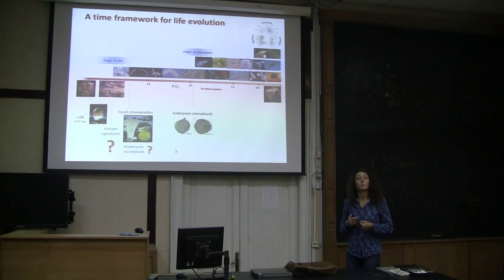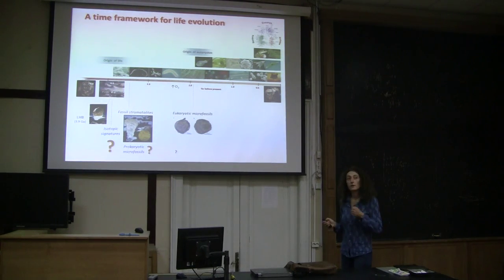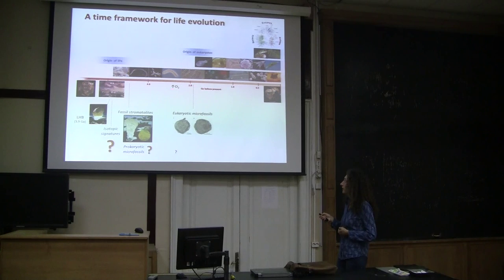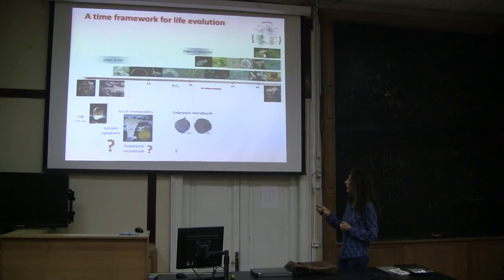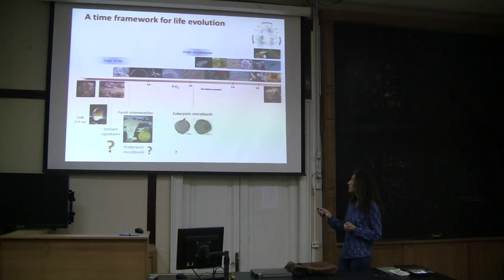When eukaryotes appeared, possibly much later, the oldest not contested eukaryotic microfossils date back to 1.89 billion years ago. There are some claims before but they are controversial. So they appear after prokaryotes, and in particular bacteria were there on Earth. We know that the rise of oxygen in atmosphere that occurred around 2.4 billion years ago was due to the oxygenic photosynthesis that evolved in cyanobacteria. So cyanobacteria were already present. Eukaryotes appeared later, much later than prokaryotes.